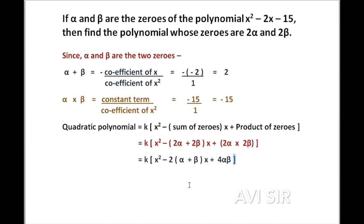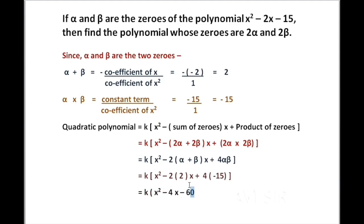Now we substitute the values. We get k times x squared minus 2 times (alpha plus beta) times x plus 4 times (alpha into beta). Substituting alpha plus beta equals 2 and alpha into beta equals minus 15, we get k times x squared minus 4x minus 60. This is our answer. Where k is a non-zero constant — don't forget to write this.